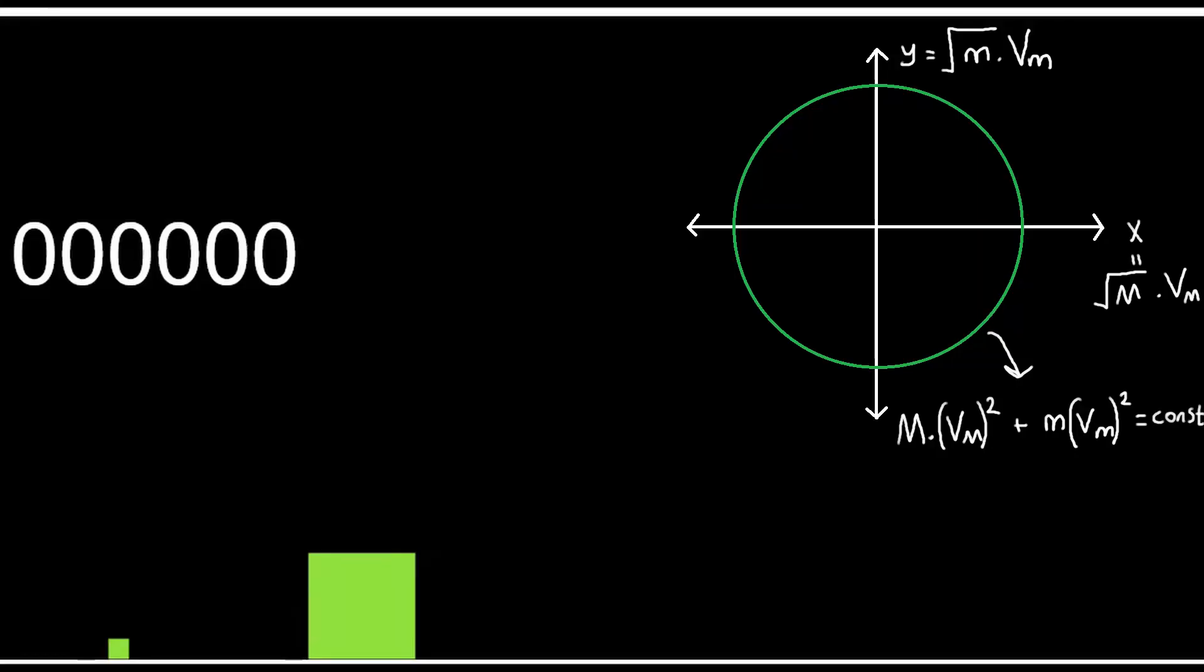We know that our starting point is here. After the first collision, we draw the graph of our second equation, the conservation of momentum.